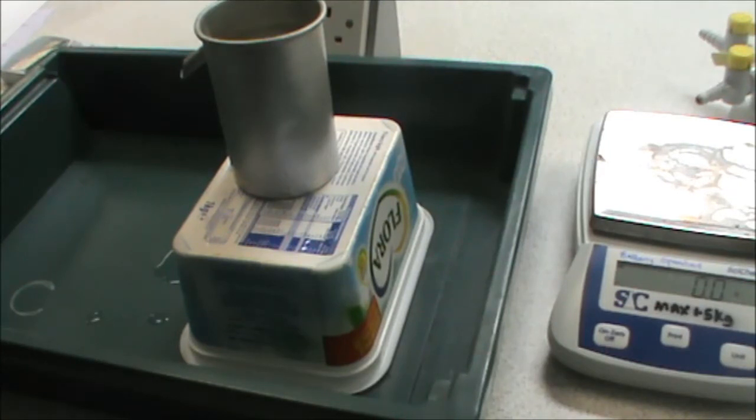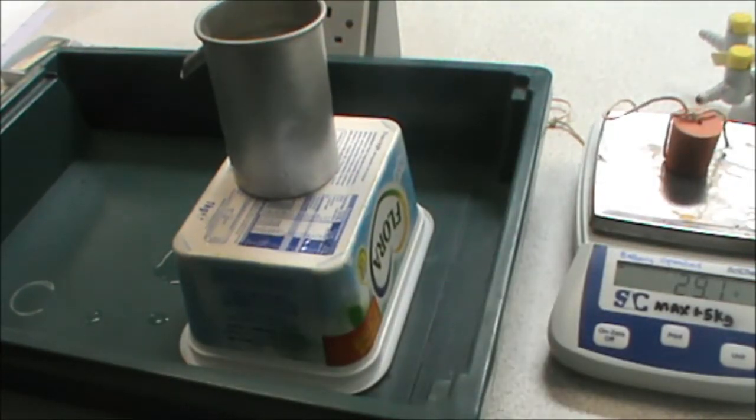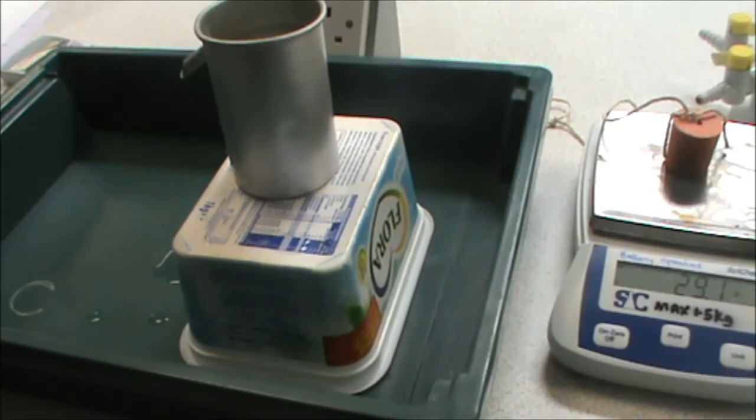But the first thing we have to do is measure the mass of our object. We can see here that my rubber bung has a mass of 29.1. We measure it before we put it into the water because once it's got wet, we'll also be weighing some of the water as well.